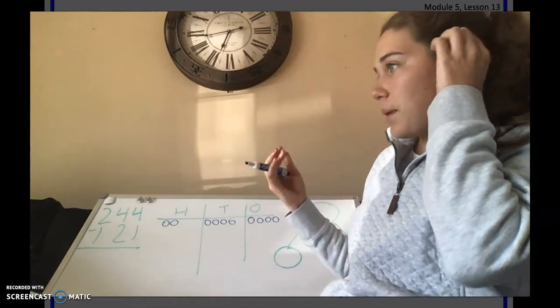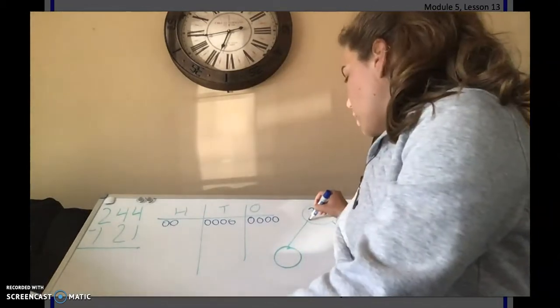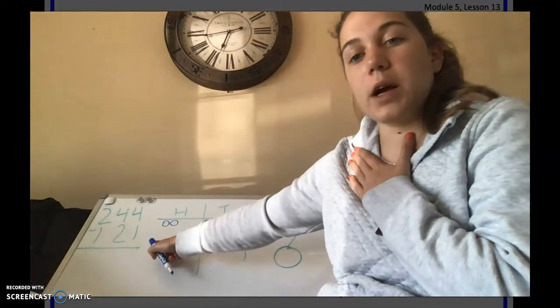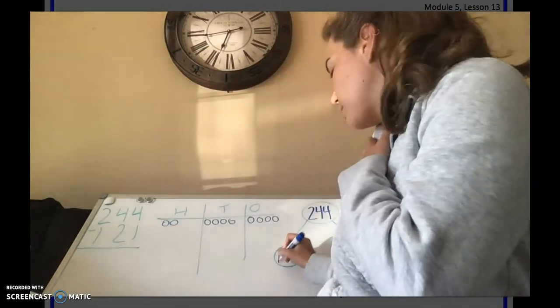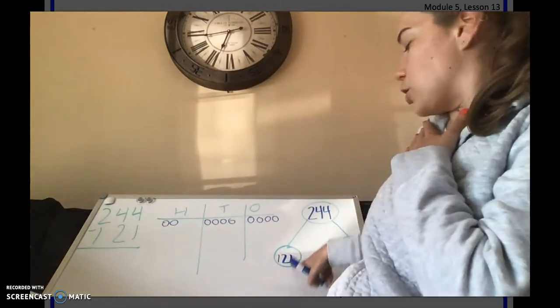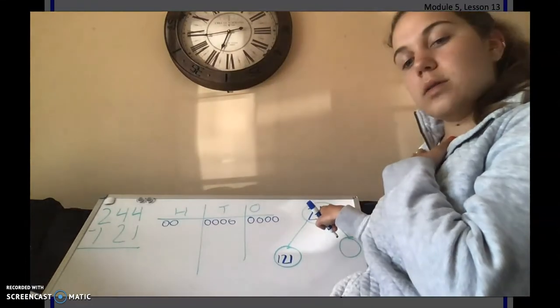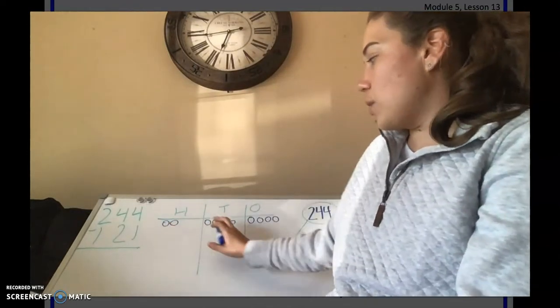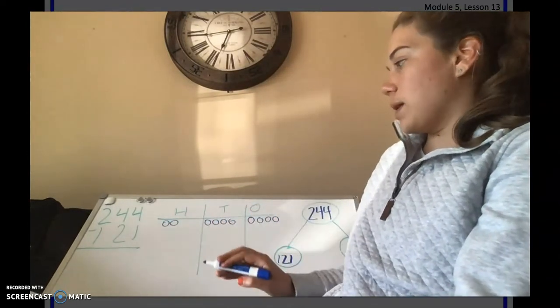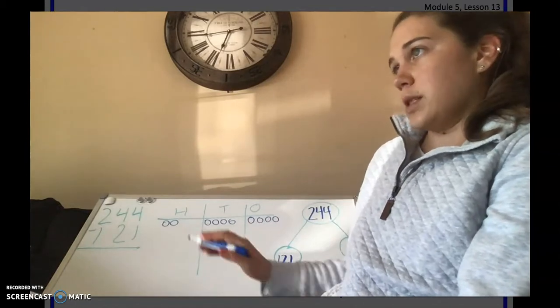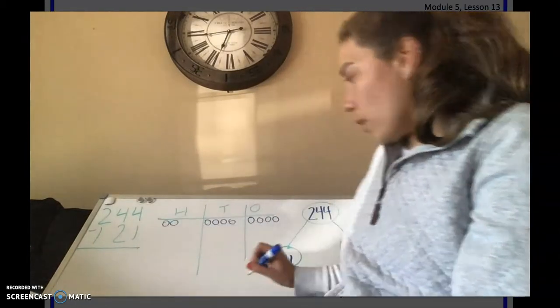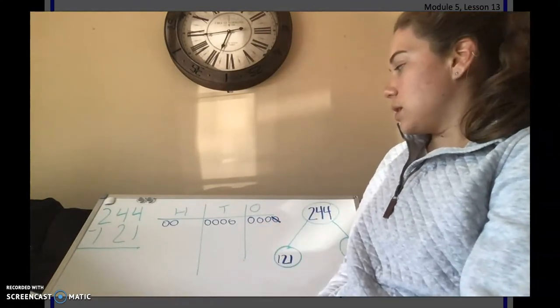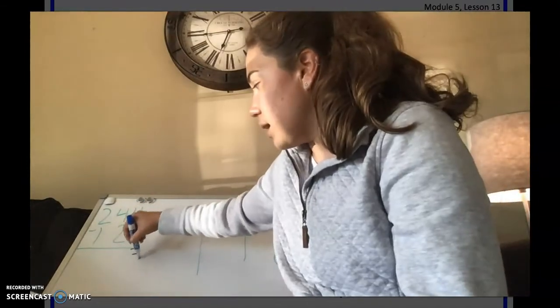Now our big number, the number we're taking away from, we know is 244. We know that one of the parts is 121, because we know our two parts come together and they make our whole. So now we're looking for our other part. So we have 2 hundreds, 4 tens, and 4 ones. We always start in our ones column, and we're going to take away 4 minus 1. How many ones do we have left? Good, we have 3 left.